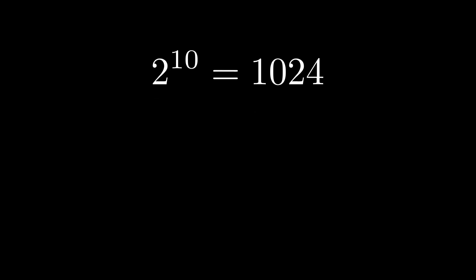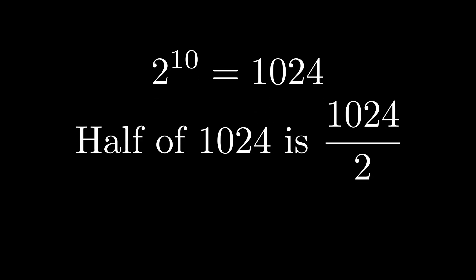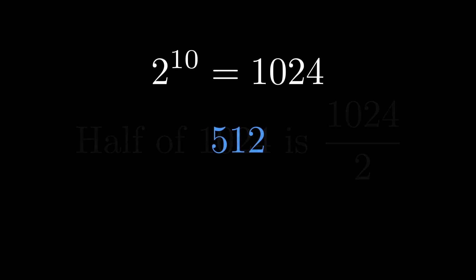We can even check this with the actual numbers to be absolutely sure. As we saw earlier, 2 to the power of 10 is 1024, and half of 1024 means we divide it by 2, which gives us 512.